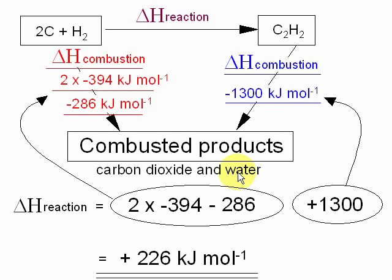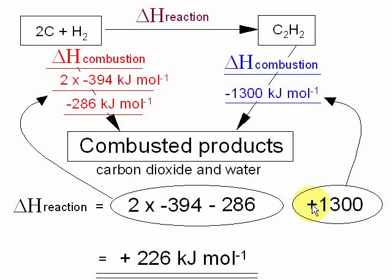On the other side, the enthalpy change going from C2H2 to those very same combusted products has been given in the question — it's the enthalpy of combustion of C2H2. To work out delta H reaction, the unknown enthalpy change, we go down this arrow — which is two times −394, minus 286 — and then go up that arrow, changing the sign. The negative becomes a positive, and this sum gives a total value of +226 kilojoules per mole.